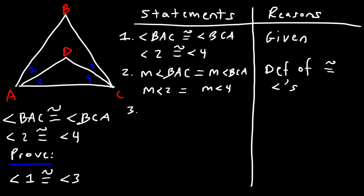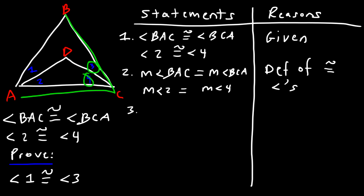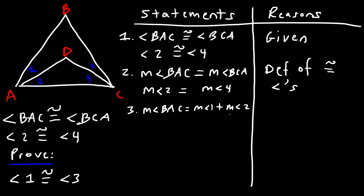Now let's move on to step three. Angle BAC is the sum of angles one and two, and angle BCA is the sum of angles three and four. So we can say the measure of angle BAC equals the measure of angle one plus the measure of angle two, and the measure of angle BCA equals the measure of angle three plus the measure of angle four. The reason for this is the angle addition postulate.